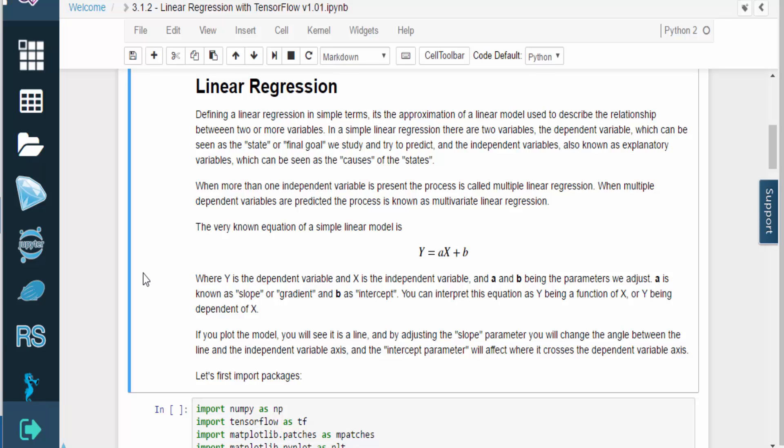The dependent variable is the value that we want to analyze or predict. The independent variable is explanatory and is used to predict the changes in the dependent variable.